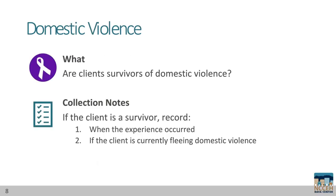This element asks if clients are survivors of domestic violence, and if so, when their experience occurred and if their current homeless experience is due to fleeing domestic violence. HUD defines a yes for domestic violence as if the person has experienced any domestic violence, dating violence, sexual assault, stalking, or other dangerous or life-threatening conditions that relate to violence against the individual or a family member, including a child, that has either taken place within the individual's or family's primary nighttime residence.